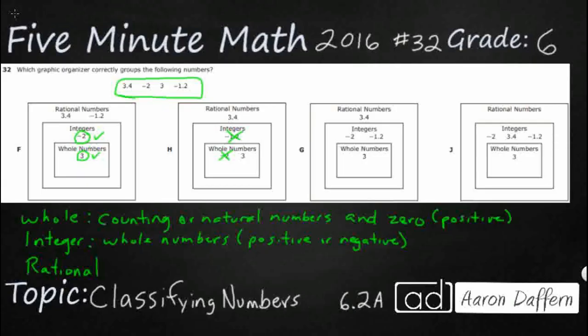G doesn't look like it's going to work either, because even though my negative 2 works, negative 1.2 is not going to work because it needs to be a negative whole number. And it looks like we've got problems here on J as well. We've got both 3.4 and negative 1.2. Those are both decimals, and so they both don't belong in the integer. Only one that belongs is that negative 2. So we've taken care of 3, we've taken care of negative 2.